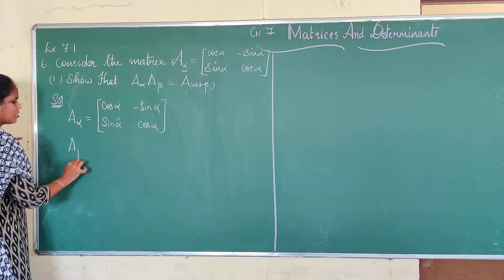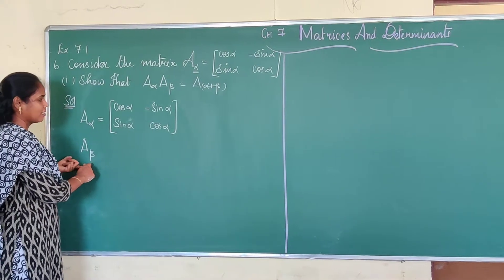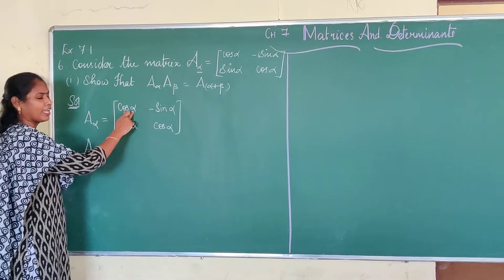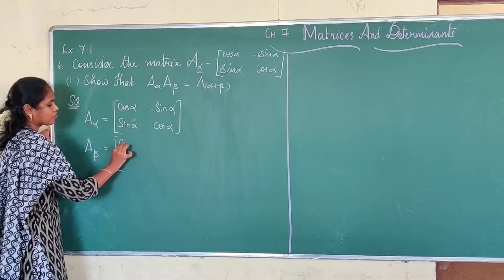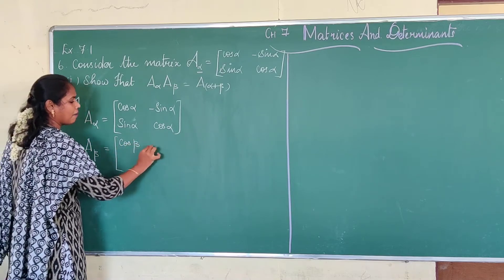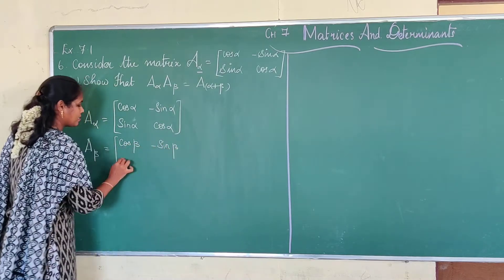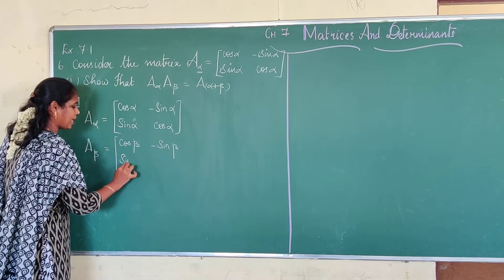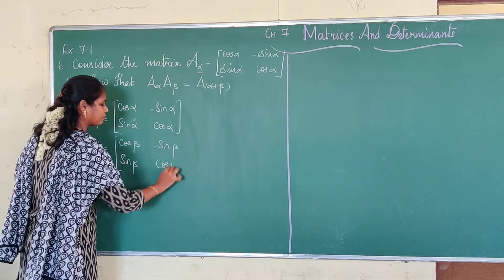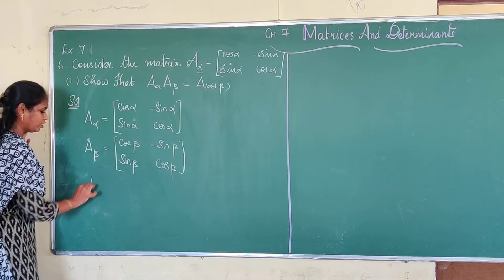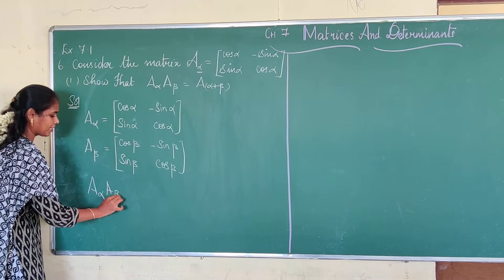And A(β) — I am just going to change my angle α into β. So my matrix will become: cos β, minus sin β; sin β, cos β. Now we are going to find A(α) into A(β).